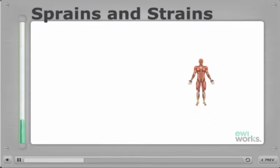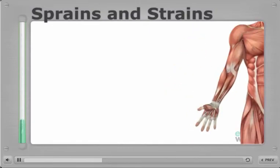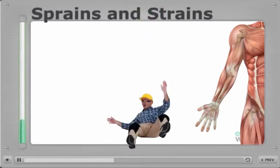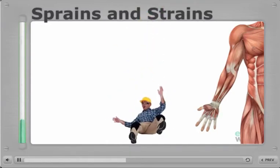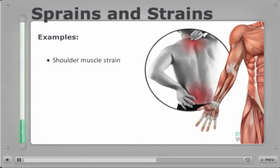They can develop gradually over time or can result from an instantaneous event, such as a slip and fall. Examples of strains and sprains include shoulder muscle strain and low back pain.